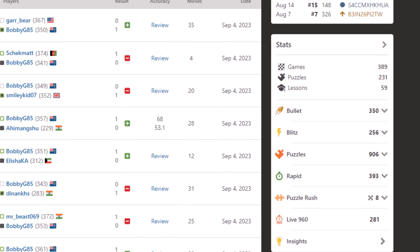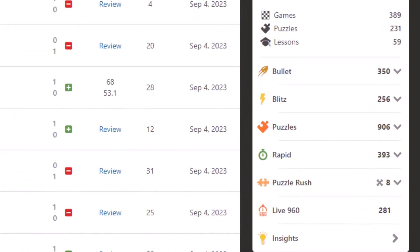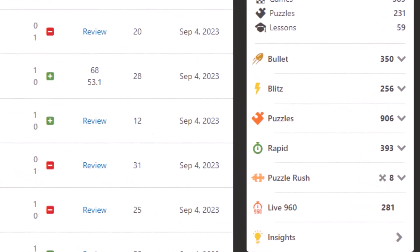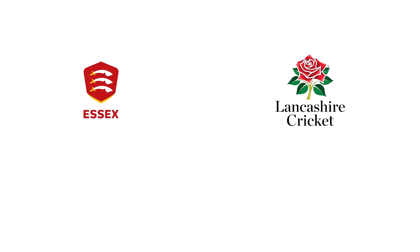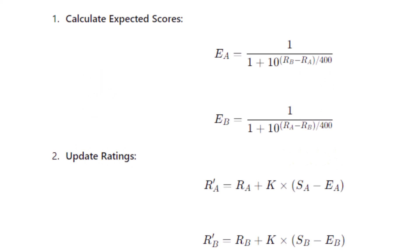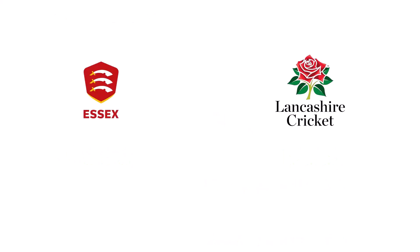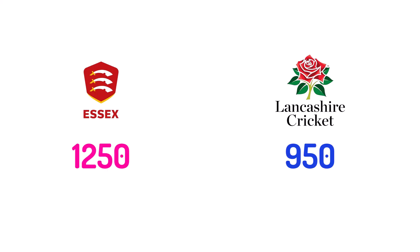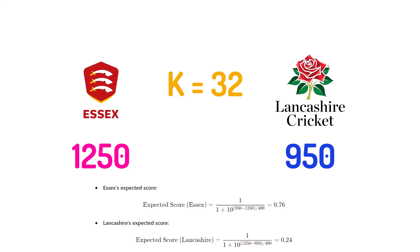Chess.com has probably the most famous ELO rating system in the world and we've essentially mimicked it for this project. Each team starts their county championship journey with 1000 points. The system uses a formula that may seem complex, but here's the gist: both teams contribute points to a pot based on their ratings, up to a value known as K. In our case that's 32, but it could be 1, 2, or 4. The lower the number, the fewer points that are shared and the lower the ratings.